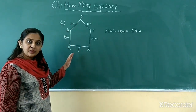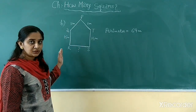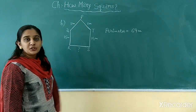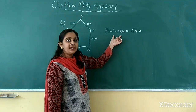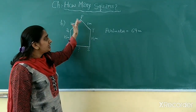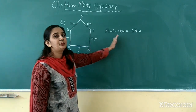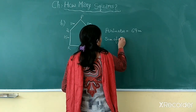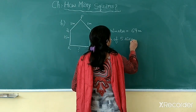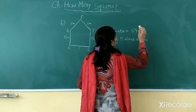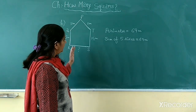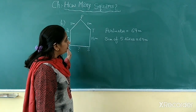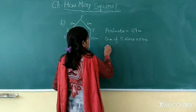Now children, you will notice in this figure the length of 4 sides is given to us and one side is missing — we want to find out the length of this missing side. According to the definition of perimeter, the sum of all 5 sides equals the perimeter. So we will write: sum of 5 sides is equal to 69 meter, which is the perimeter of this pentagon. Now the length of 4 sides is known to us, so we can find out the sum of those 4 sides.